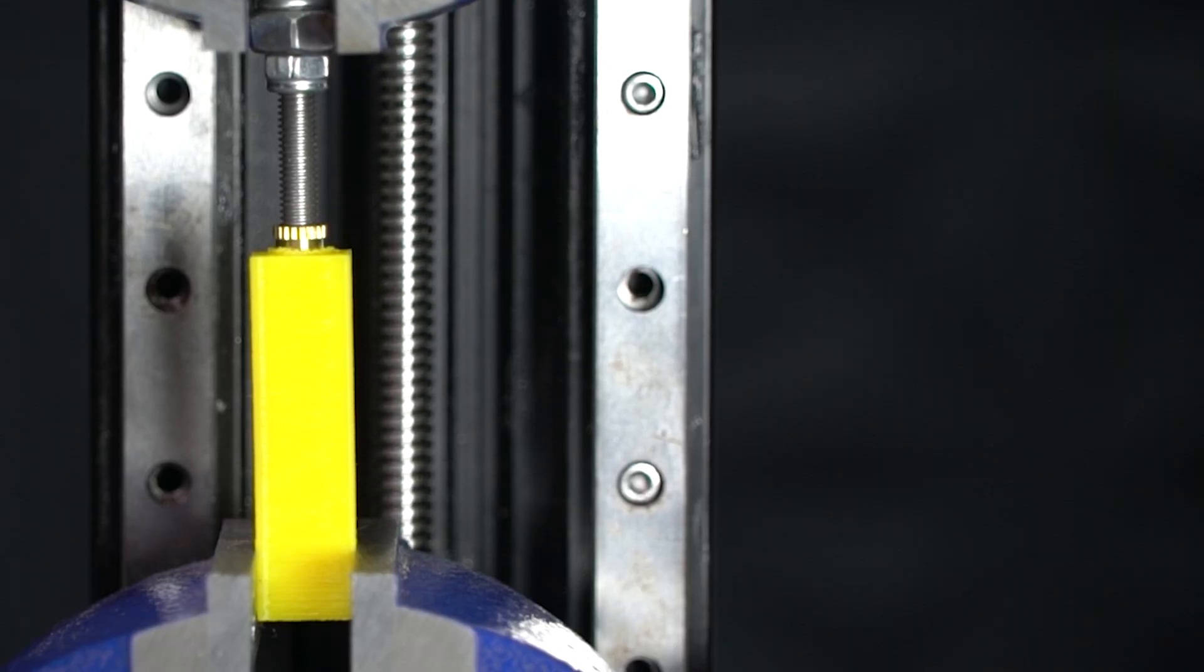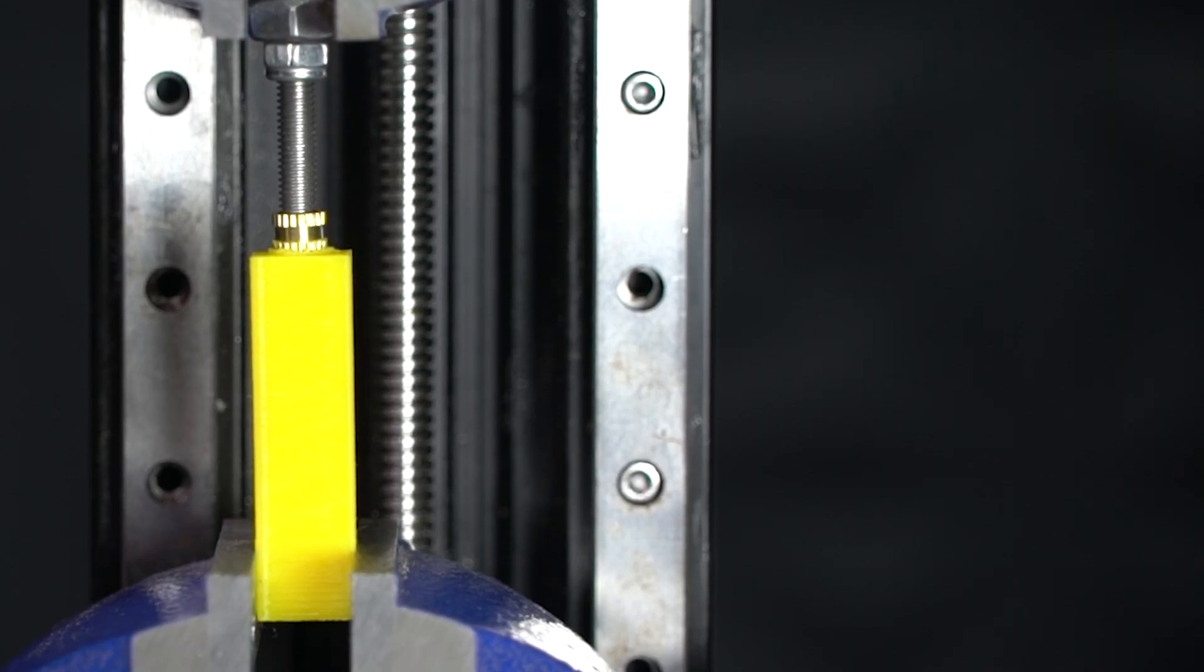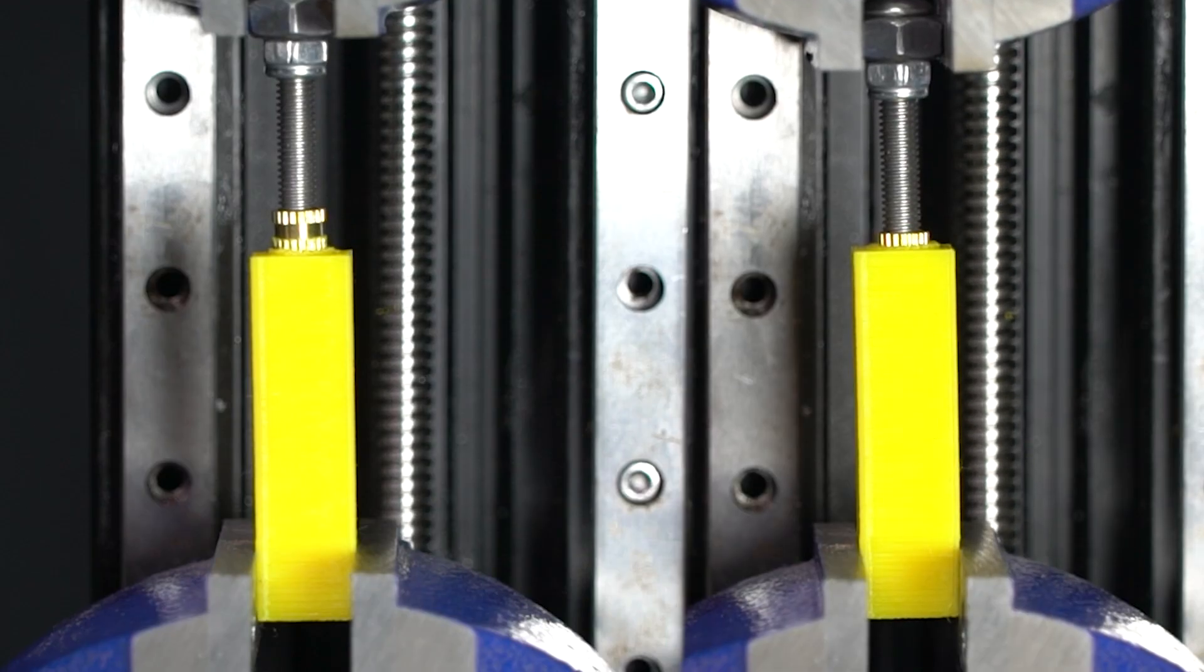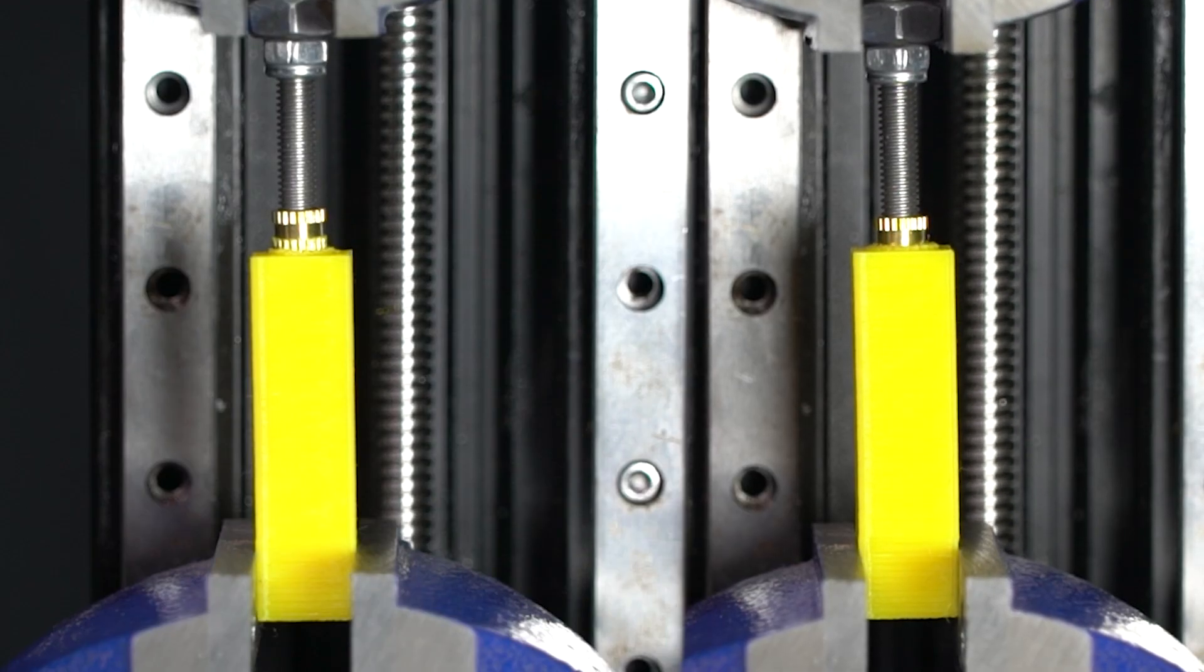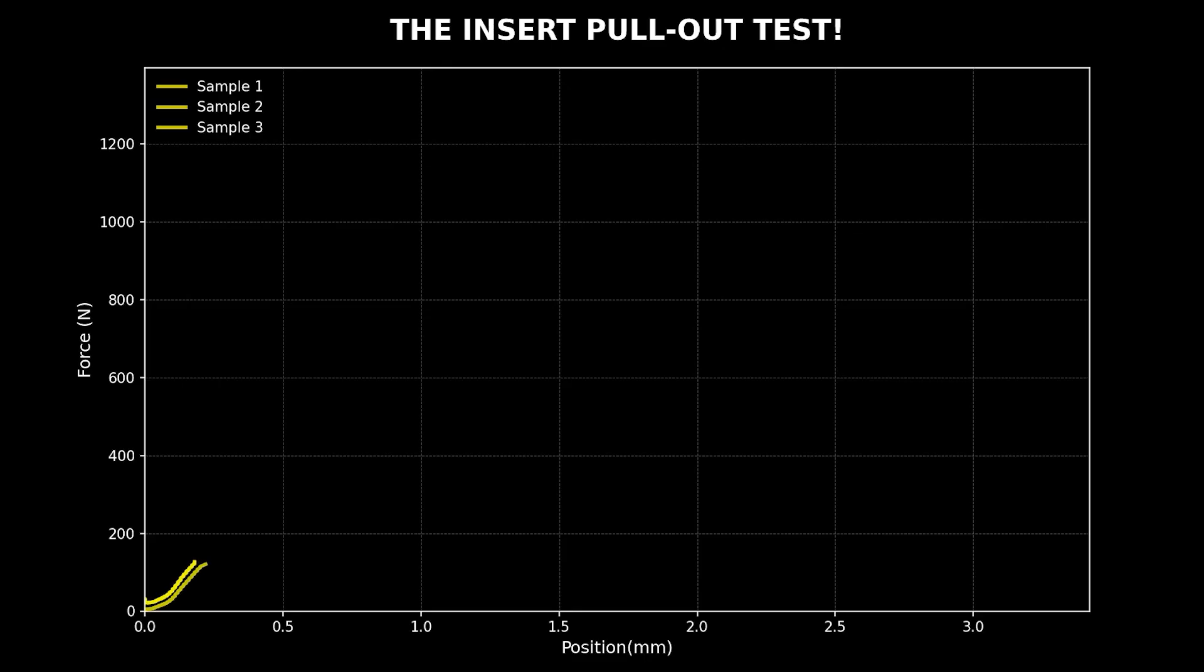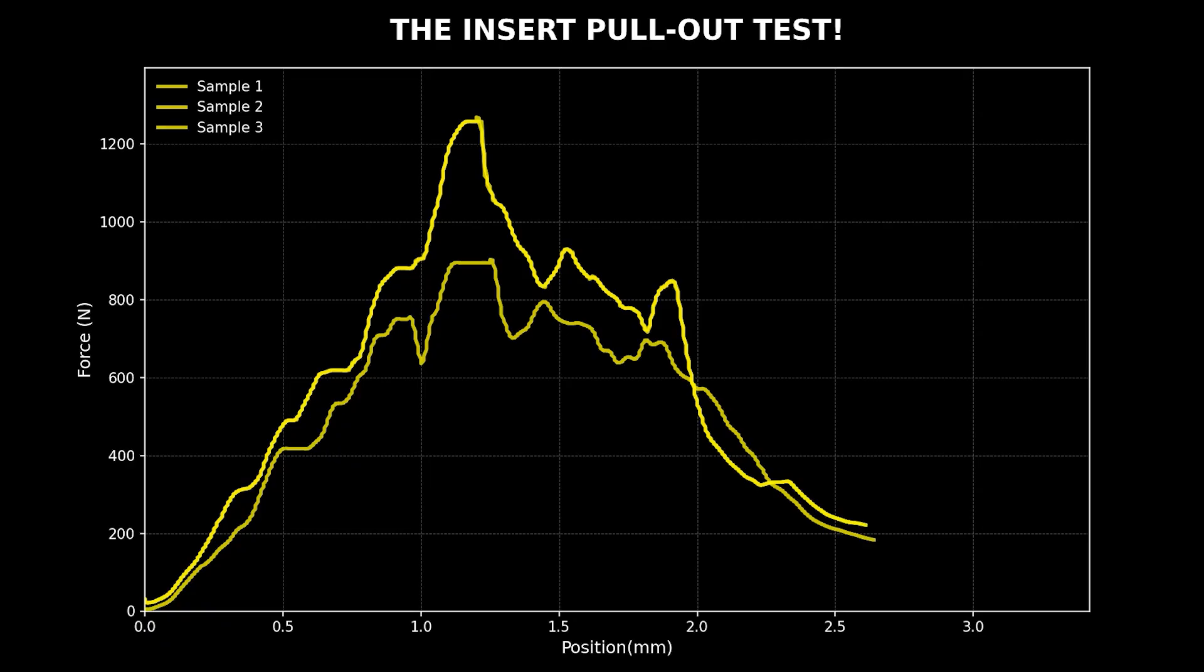Next is PETG, our flexible friend. Let's see what it can do. It pulls, it stretches. It fought until the very last drop of strength. And the result? 1,268 Newtons. A solid performance.